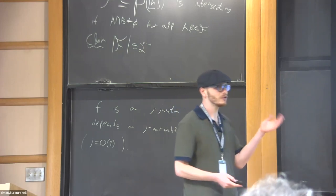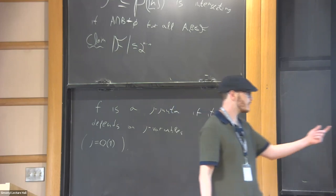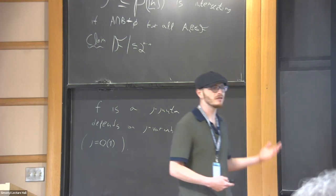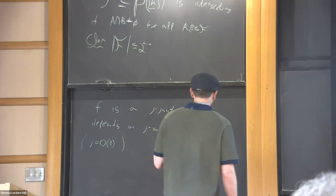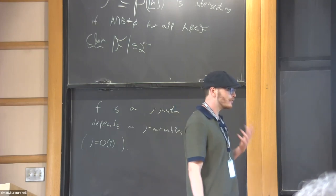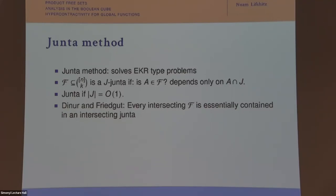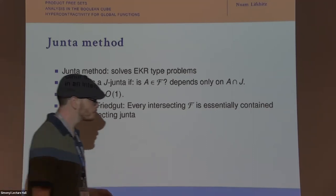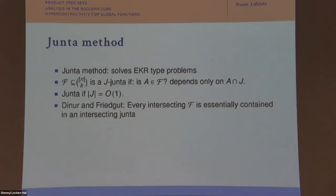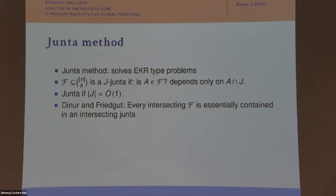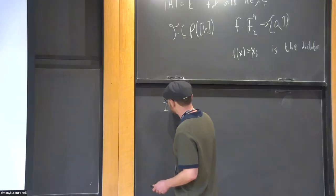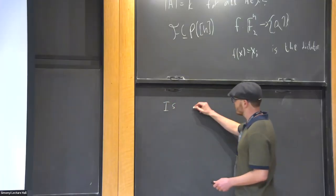We can basically ignore all other votes and only look at the votes of these three people to determine who wins. This notion is important not only in social choice but also in extremal combinatorics. If we have a family of sets, we can say it's a j-junta where j is a set of small size.